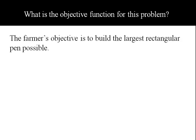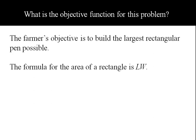What is the objective function for this problem? Every constrained optimization problem has an objective function and a constraint. This farmer's objective is to build the largest rectangular pen possible, so we need to put some functional form on this. A rectangle is length times width, so L times W in our notation. A equals L times W, where A stands for area. This is our objective function.